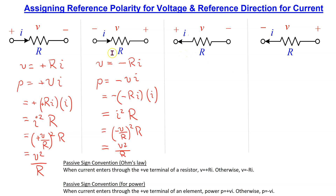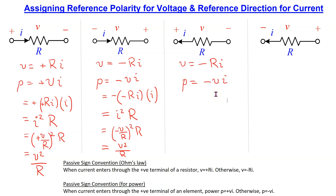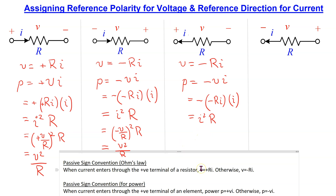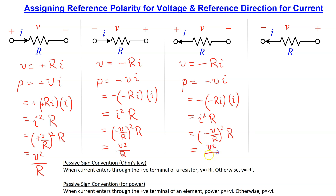In the third case, current flows from left to right with the assigned reference polarity as shown. Since this conventional current is entering the terminal marked minus, we use Ohm's law with a negative sign and the power formula with a negative sign. Substituting the value of V gives minus times minus R times I, multiplied by I, which equals I squared R. Substituting the value of V above gives minus V over R, squared times R, which is V squared over R.